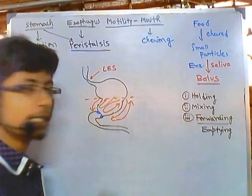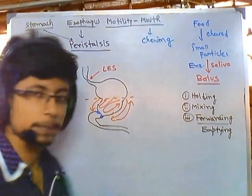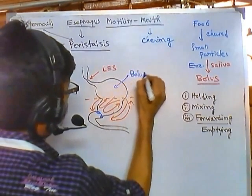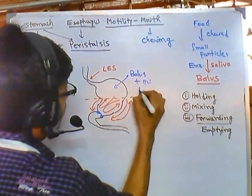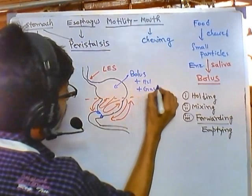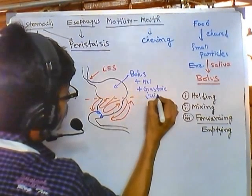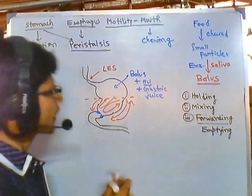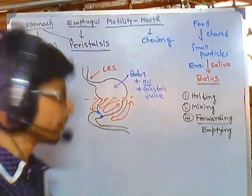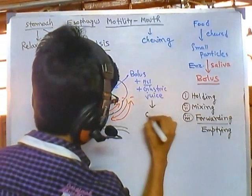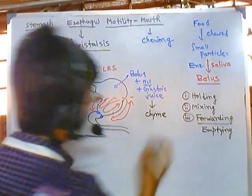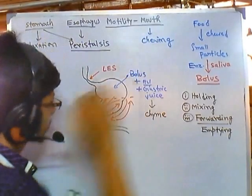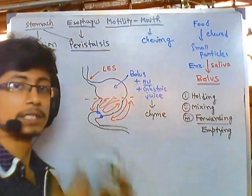After mixing the food multiple times in this way, the bolus is now mixed with gastric juice — which includes HCl — and the mixed product is termed chyme. The chyme keeps hitting the wall and coming back until it is completely mixed.